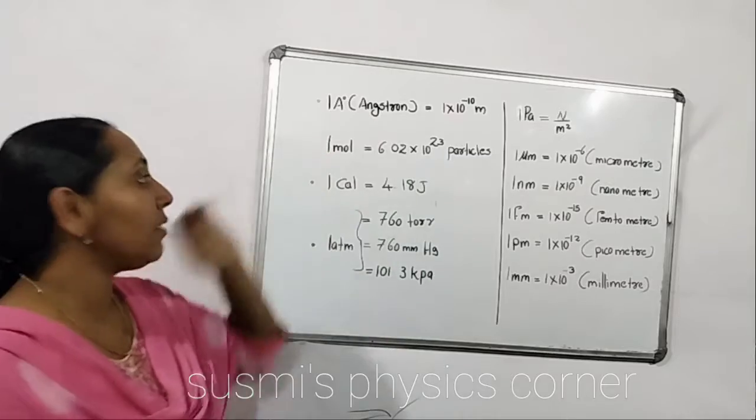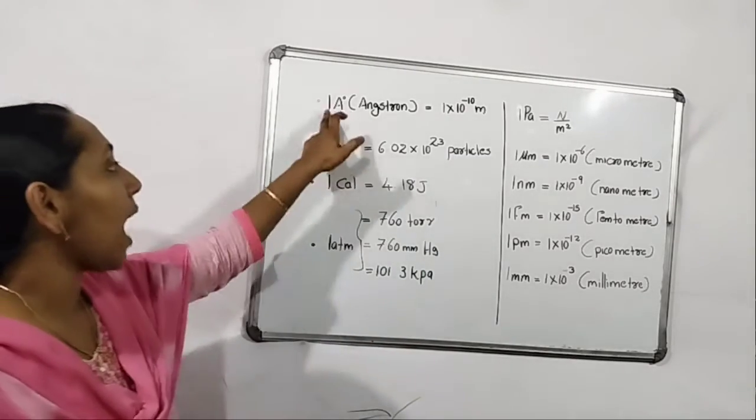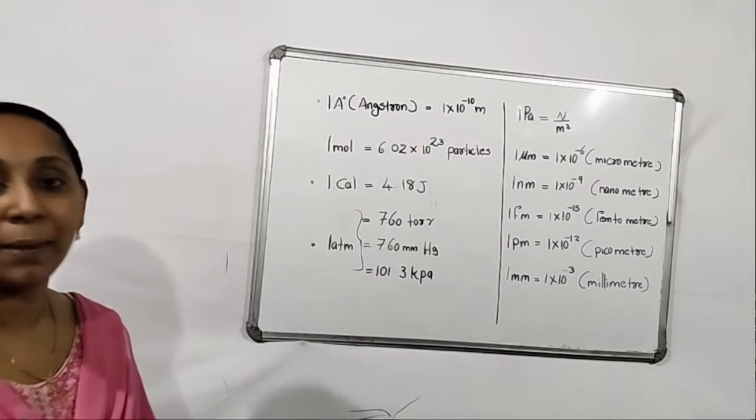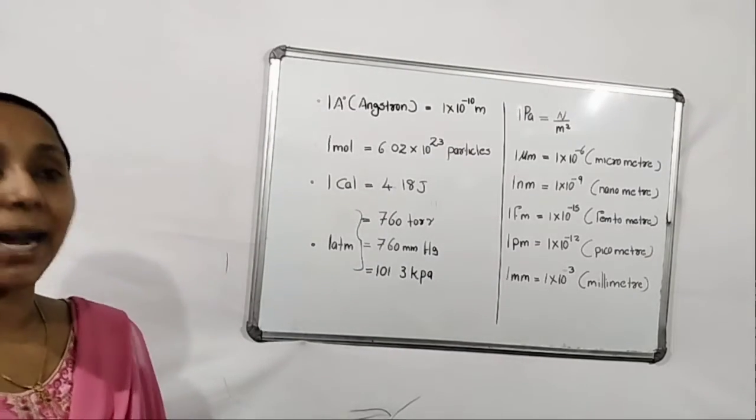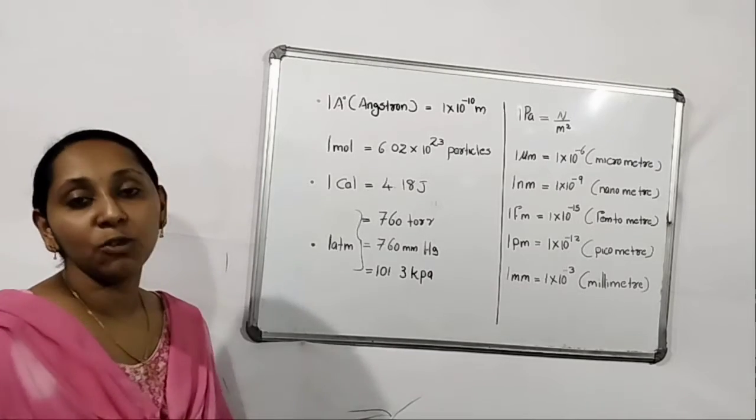First one is very commonly used in the chapters of atoms, Armstrong theory. 1 Armstrong equal to 1 × 10^-10 meters. A very small unit used to measure atoms, electrons like that. So 1 Armstrong equal to 1 × 10^-10 meters.